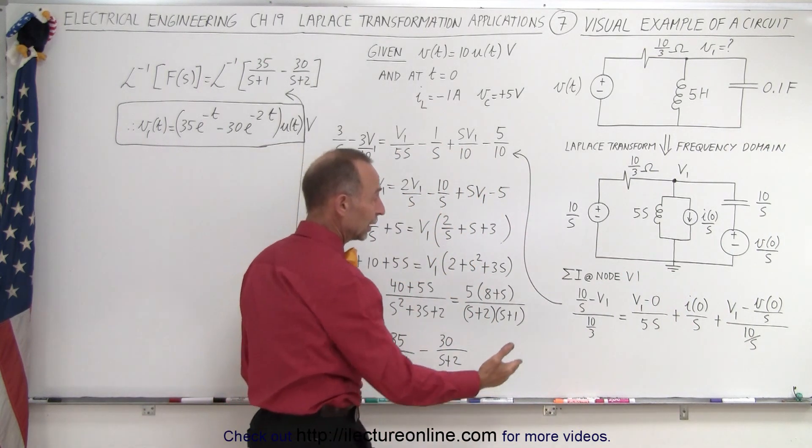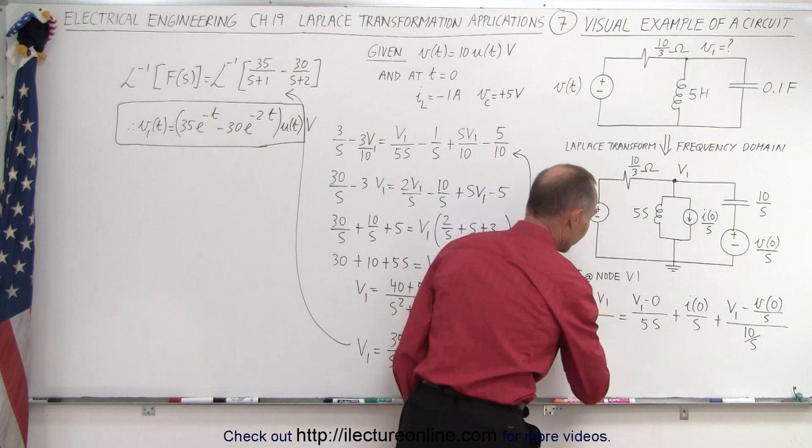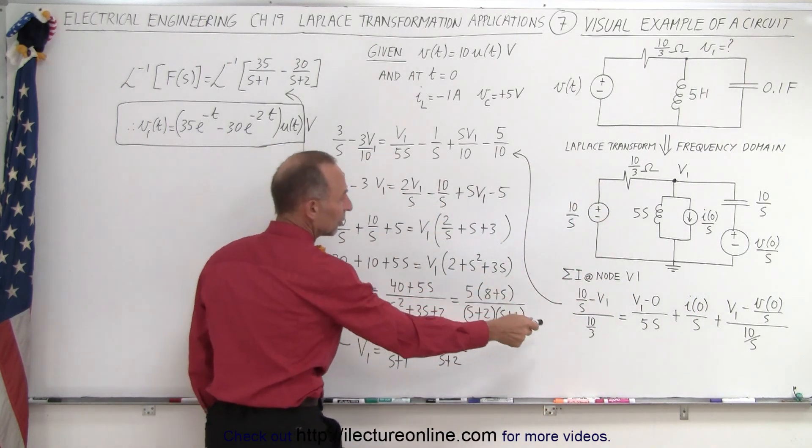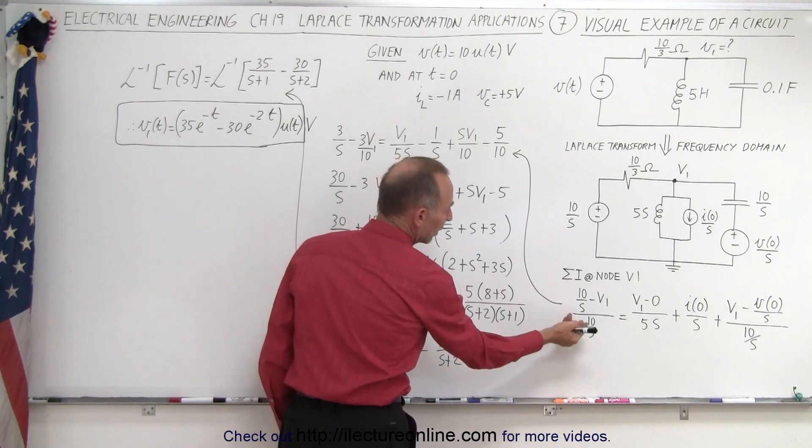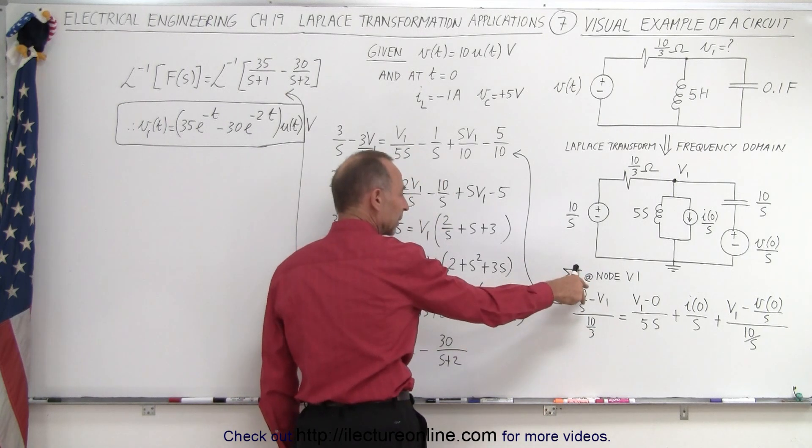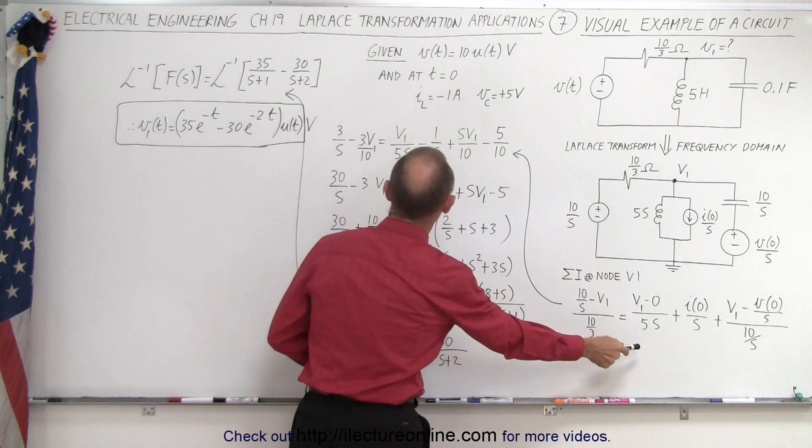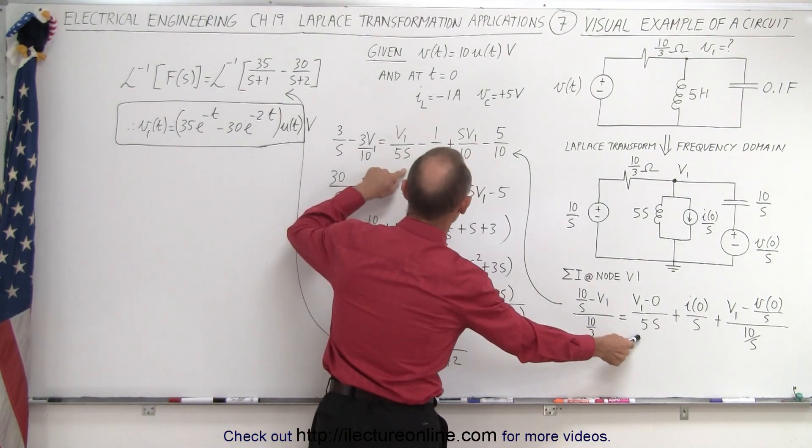Now we need to take this equation and solve it for V1. Notice that we do some algebraic manipulation. Here we divide by 10/3, the same as multiplying by 3/10. You can see that's applied here. Here we have the same, V1 divided by 5S,